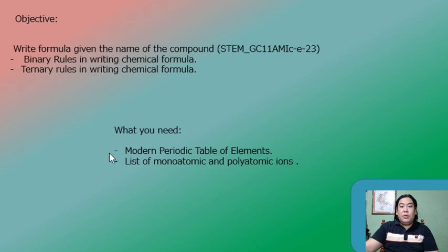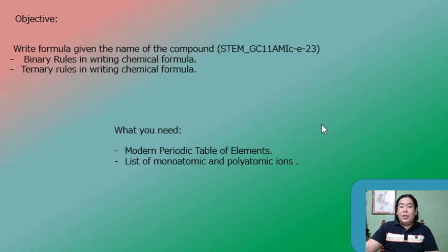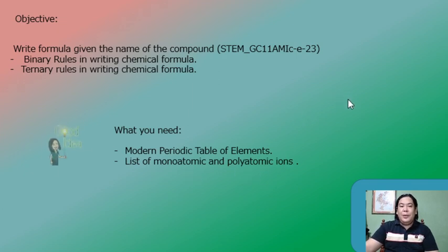What you need is your modern periodic table and the list of monoatomic and polyatomic ions. Don't worry — if you have your periodic table, you will also find this list of monoatomic and polyatomic ions at the back part of your periodic table.